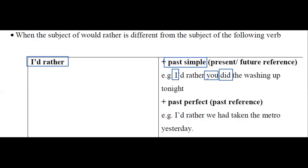If you want to express a past reference with a different subject, you can use the past perfect after 'would rather'. For example: 'I would rather we had taken the metro yesterday.'